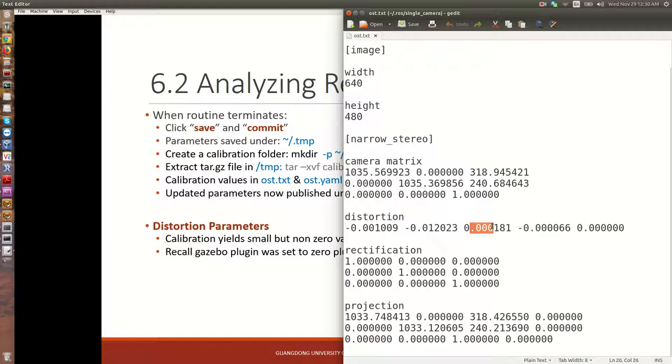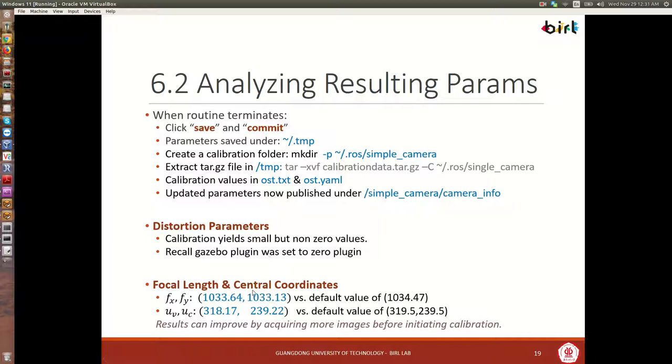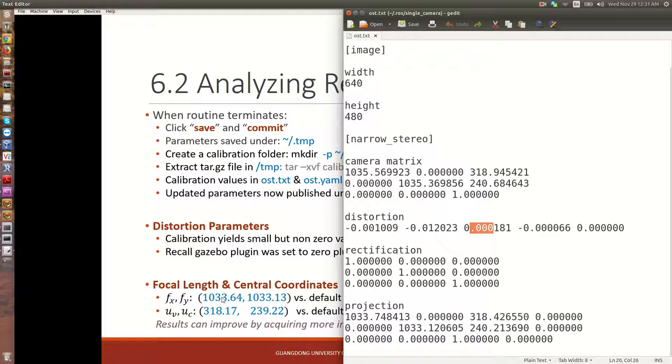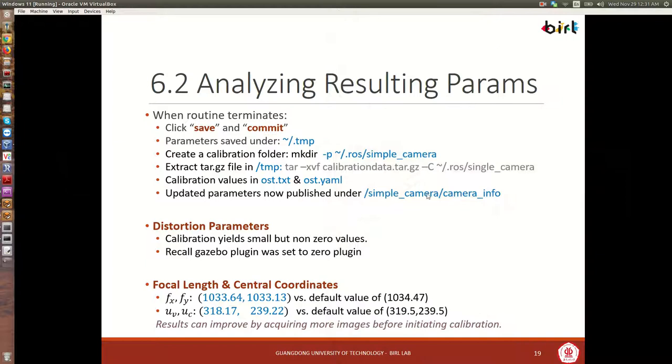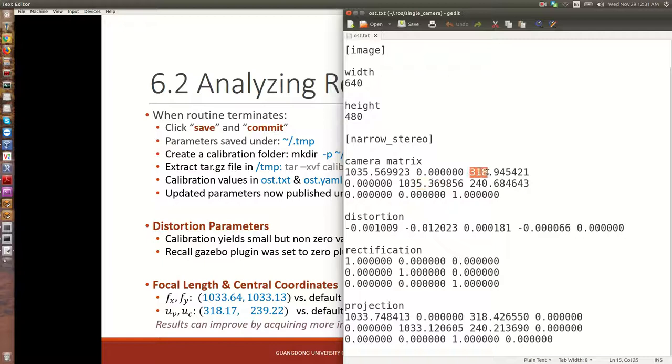Coming here to this file. For the distortion, distortion parameters, these are close to zero. Even though they're not zero, they're close. Now, how can we get a better result? By even taking more pictures. Here, I say recall that in the gazebo plugin, we set everything to zero. For the focal length. Now, these numbers may be different from my PBT, because it's from a different run of the algorithm. But this is the focal length, right? 1035.56 here, and 36 for, this is for the X, and this is for the Y. So earlier I had gotten these numbers. But the default value that we did from the computation was 1034. So you can see that they're close, but not exact. And then for UV and UC, here we have 318 and 240. Though these numbers should be 319.5 and 239.5. So again, close, but not quite.